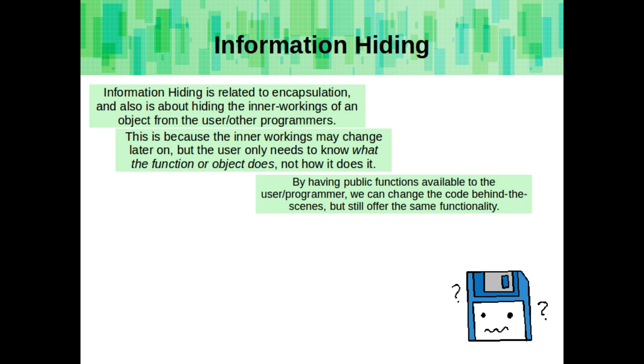Information hiding is related to encapsulation, and is also about hiding the inner workings of an object from the user or other programmers. This is because the inner workings may need to change later on, but the user only needs to know what the function or the object does, not how it does it. By having the public functions available to the user or programmer, we can change the code behind the scenes, but still offer the same functionality.